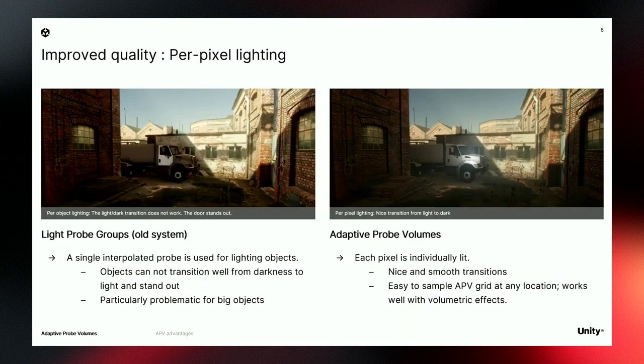One huge advantage of APV is that lighting is per pixel — a great improvement over the old system where lighting is per object. Looking at the left image, the truck is not transitioning well from darkness to light, and the door is clearly standing out, because each mesh is lit with a single interpolated probe. But on the right, with APV, everything is correctly lit. Each pixel can sample APV at any location, giving you nice and smooth transitions.